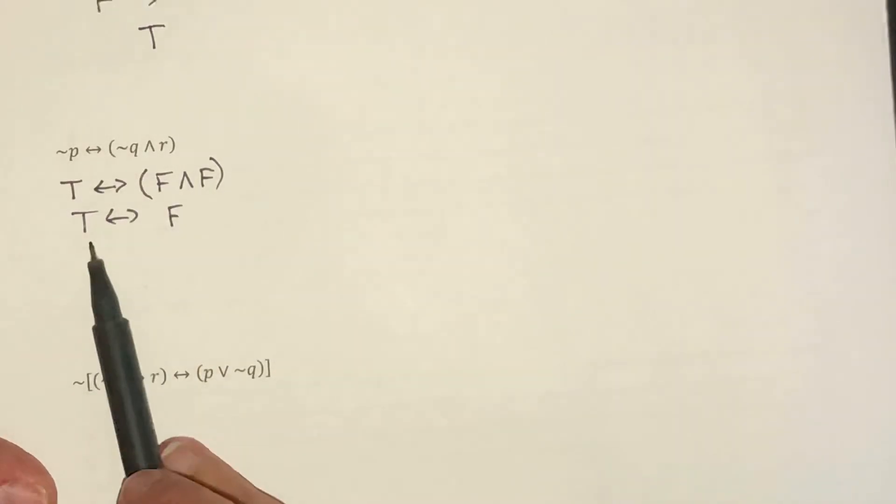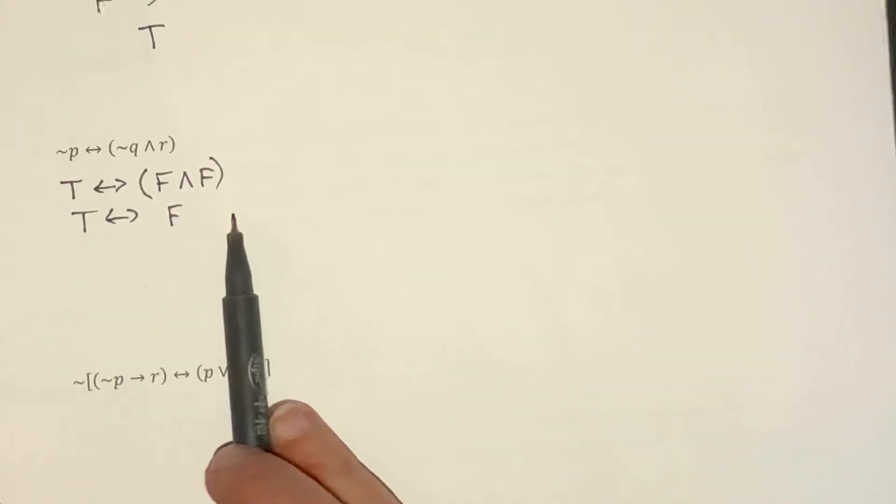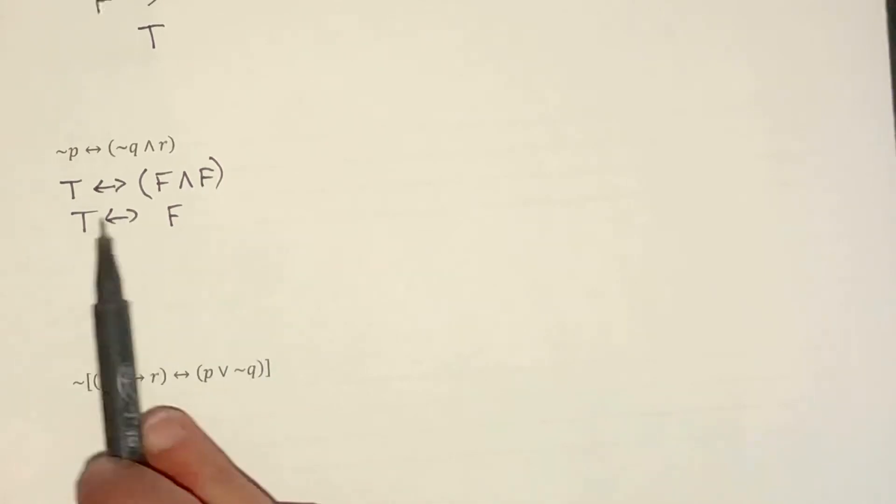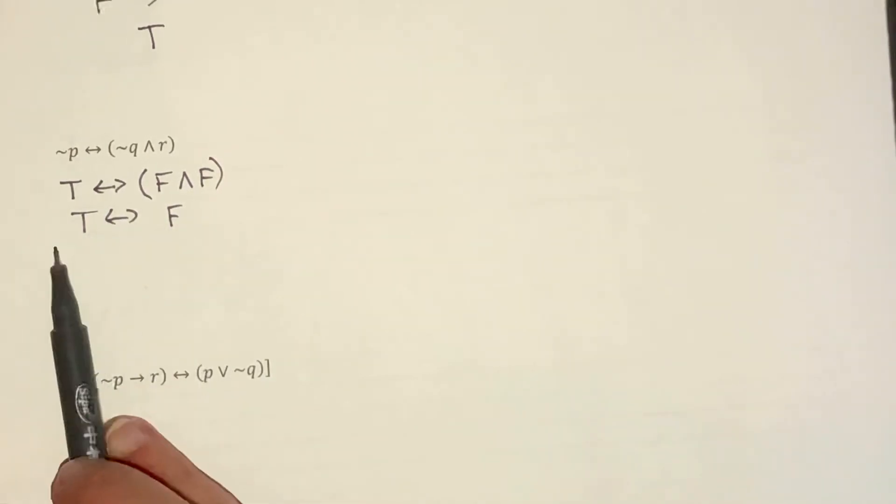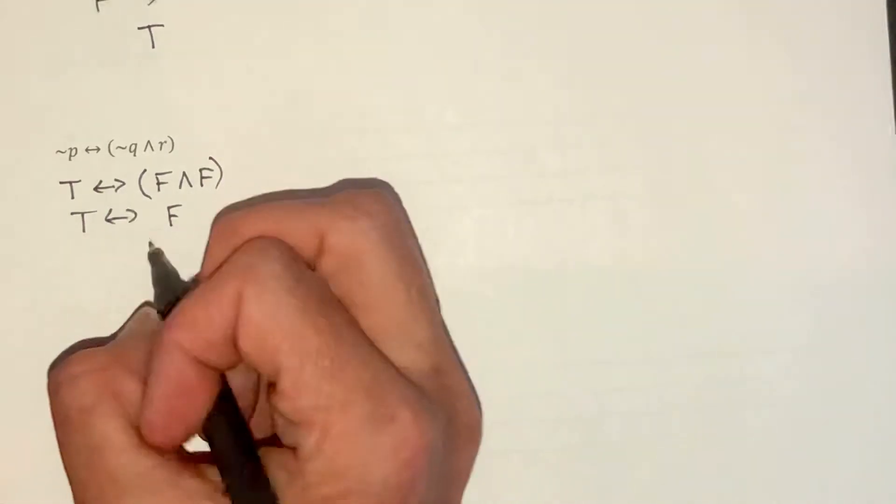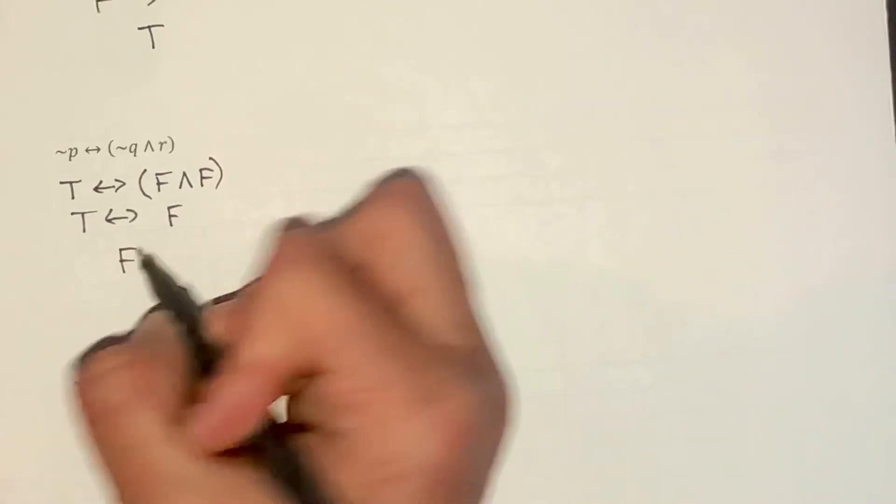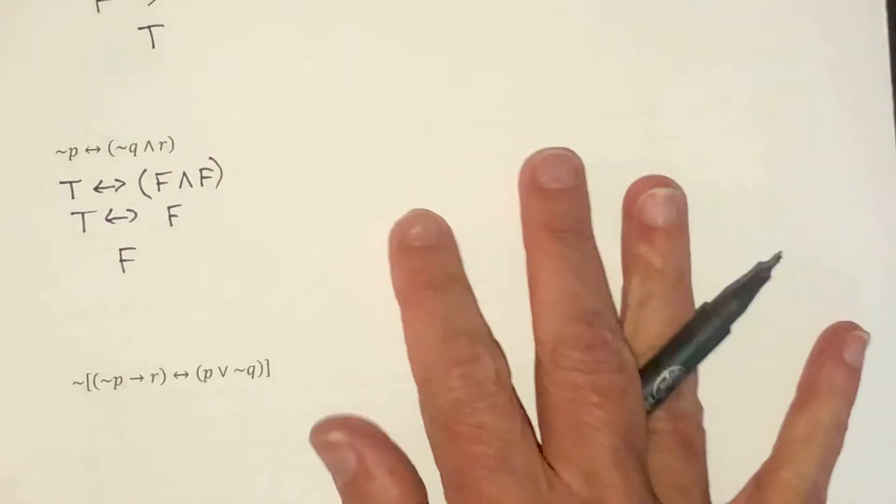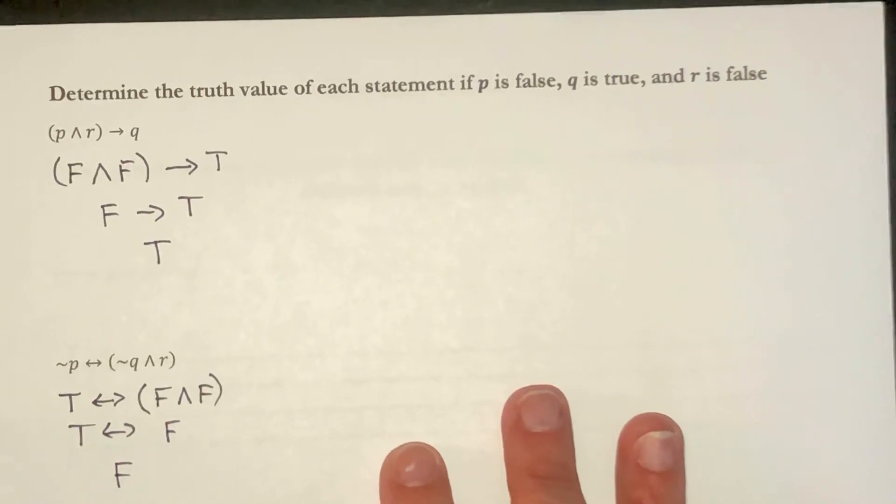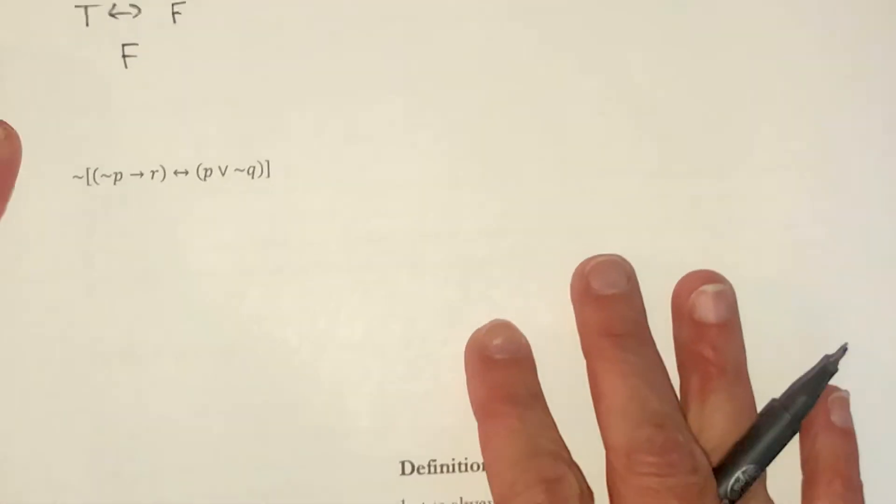So I have true if and only if false. Remember, with a biconditional, they need to be the same in order to be true. And they are not. So this overall statement is false with the given truth values. One more here.